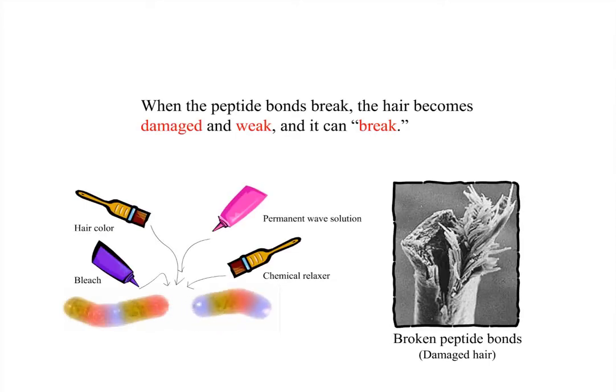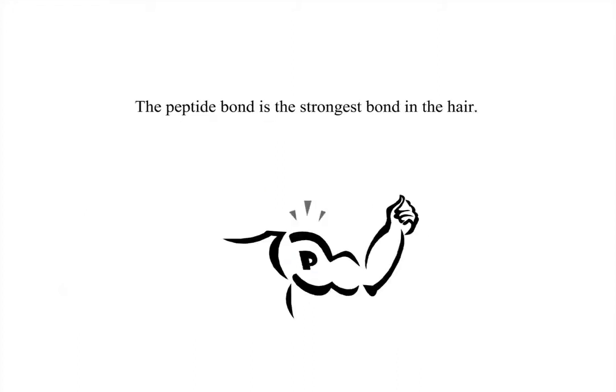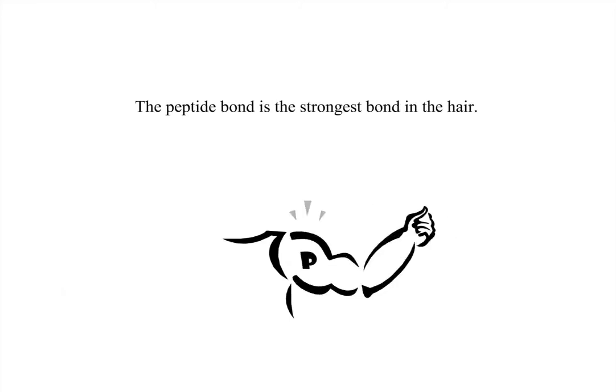When the peptide bonds break, the hair becomes damaged and weak, and it can break. The peptide bond is the strongest bond in the hair.